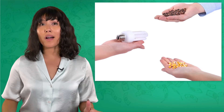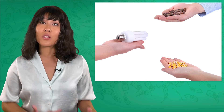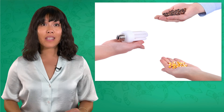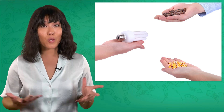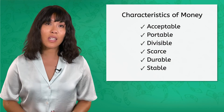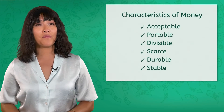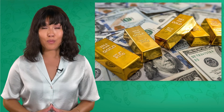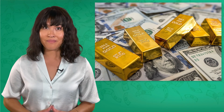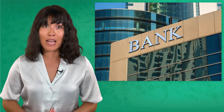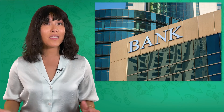Let's recap what we've covered today. While it is possible to barter to obtain goods and services, money actually makes it much easier and quicker. The reason money makes trade easier is because it is acceptable, portable, divisible, scarce, durable, and stable. We also discussed the differences between commodity money and fiat money. Tomorrow we're going to take a deeper look at banks — those institutions that make working with money even easier. Until then, remember to keep investing in yourself, one lesson at a time. See you next time!